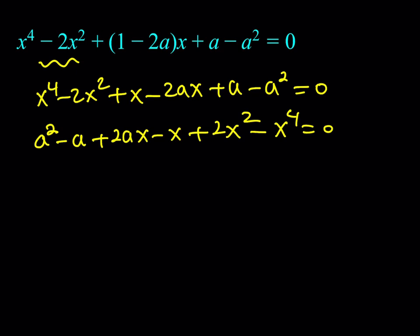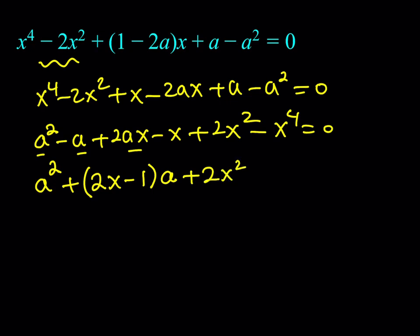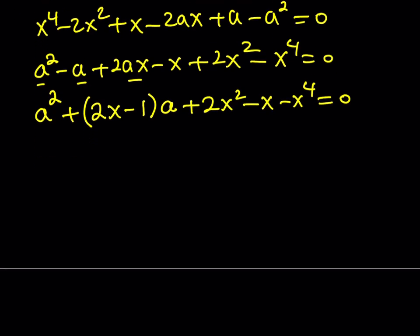Now let's arrange this. We have a squared. These two terms contain a, so I'm going to write it as (2x minus 1) times a. What's left is 2x squared minus x minus x to the fourth, equal to zero. This is a quadratic in a, so we can solve it with the quadratic formula.